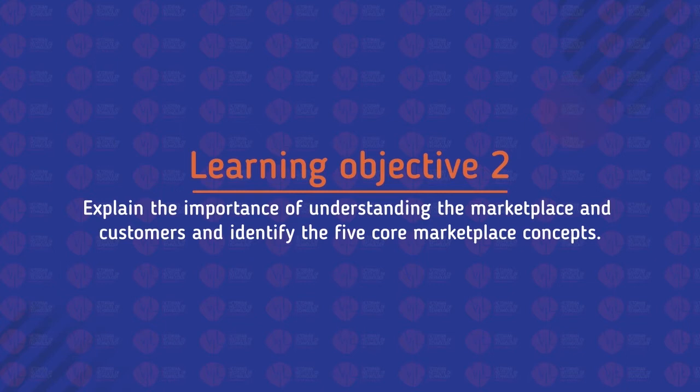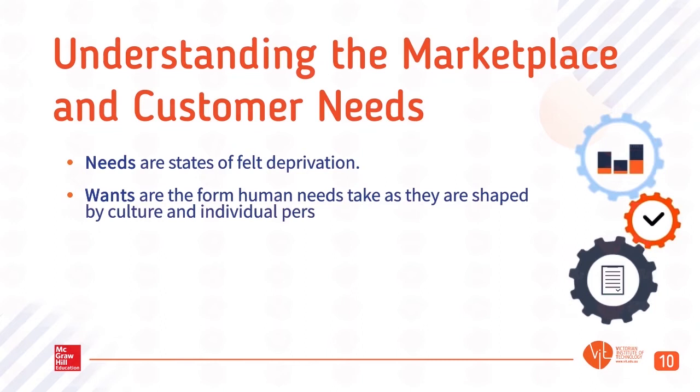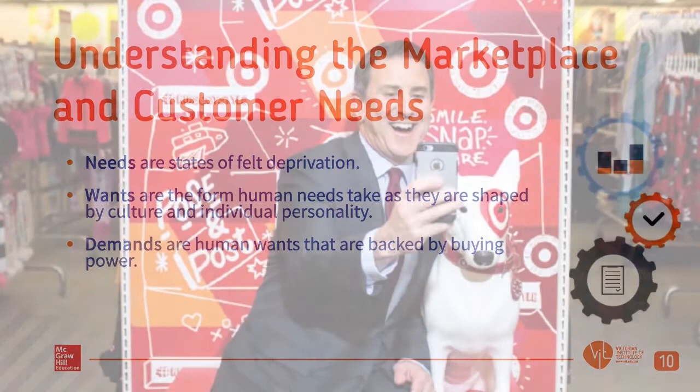Learning Objective 2: Explain the importance of understanding the marketplace and customers, and identify the five core marketplace concepts. Understanding the marketplace and customer needs: Needs are states of felt deprivation. Wants are the form human needs take as they are shaped by culture and individual personality. Demands are human wants that are backed by buying power.